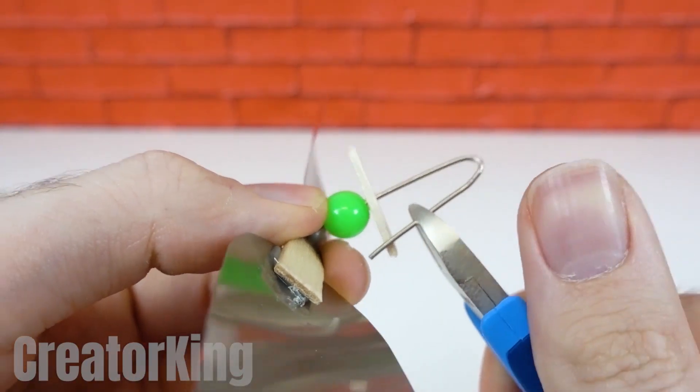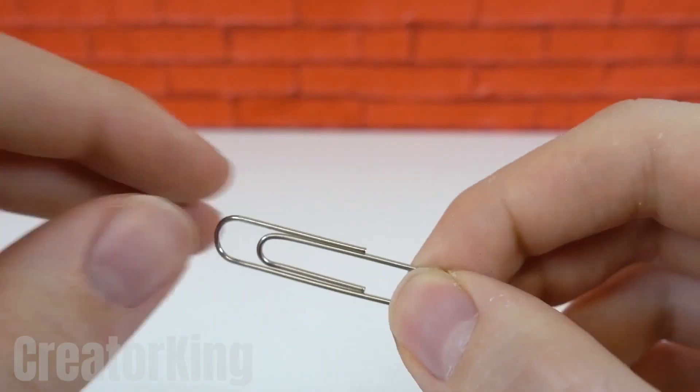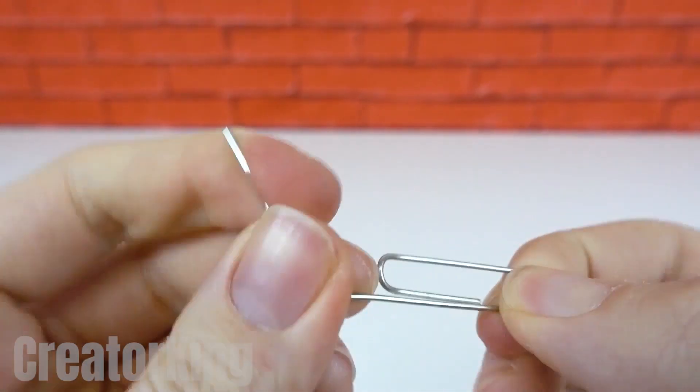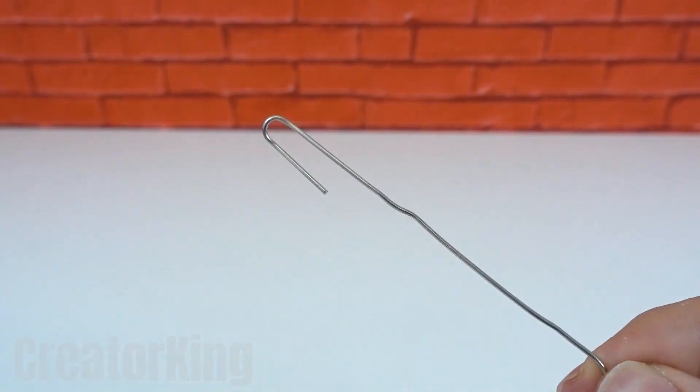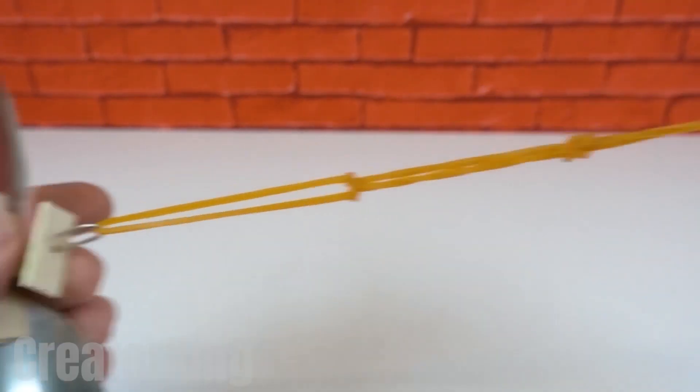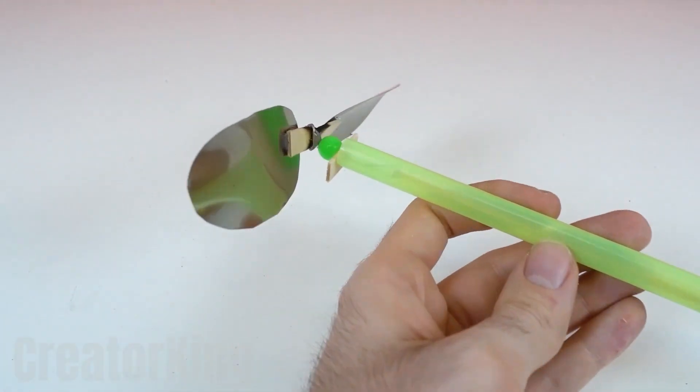Attach the rubber band to the hook we just created and unfold another clip leaving only one of its hooks. This will be attached to the other end of the rubber bands for the moment. Insert the last paper clip all the way into the straw and secure it to the propeller with a good dab of super glue.